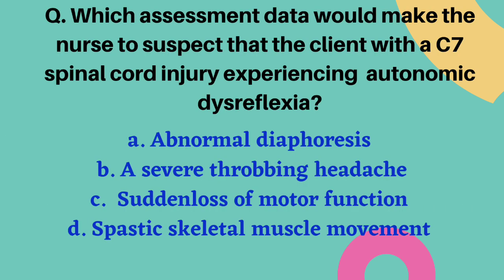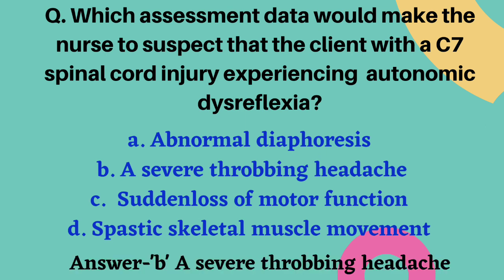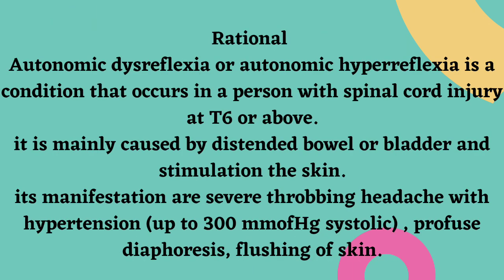Which assessment data would make the nurse suspect a client with C7 spinal cord injury experiencing autonomic dysreflexia? Options are abnormal diaphoresis, a severe throbbing headache, sudden loss of motor function, and spastic skeletal muscle movement. The correct answer is option B, a severe throbbing headache. Autonomic dysreflexia, also called autonomic hyperreflexia, is a condition occurring in persons with spinal cord injury at T6 or above.